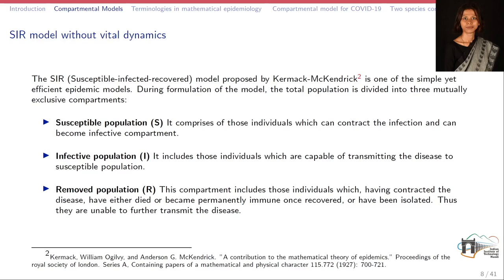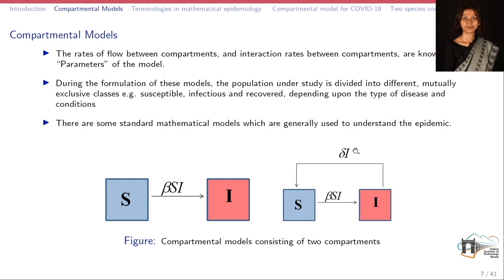The susceptible population comprises those individuals which can contract the infection and can become infected. The infected compartment includes those individuals which are capable of transmitting the disease to the susceptible population. The removed population R is a compartment which includes those individuals which have contracted the disease and have either died, become permanently immune once recovered, or have been isolated.